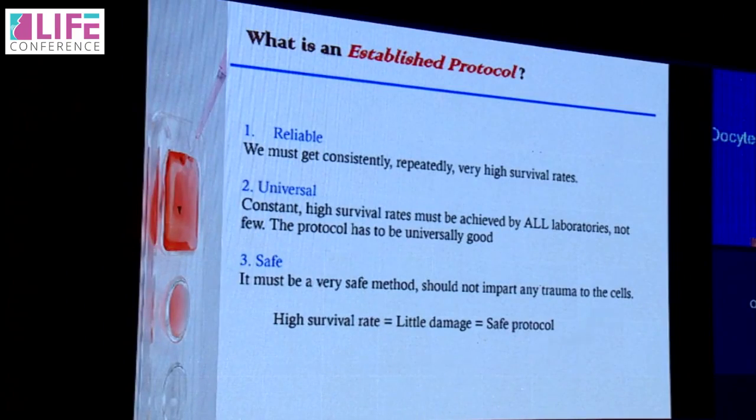For any technique to be called clinically approved and established in routine practice, it must be reliable — meaning consistently high survival rates — and universal, meaning constant high survival rates achieved by all laboratories, not just a few. Traditionally, slow freezing was used, and it worked well in certain laboratories but was not universally accepted as reliable. Vitrification, however, has proven to be reliable, universal, and a very safe method.